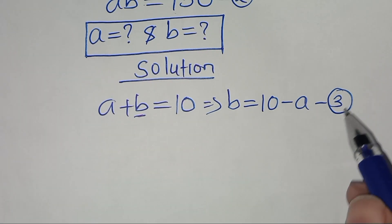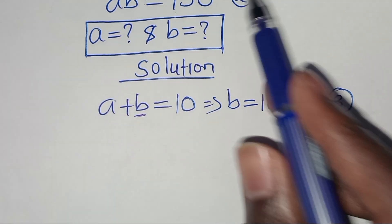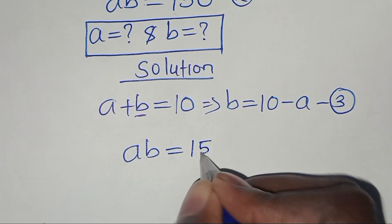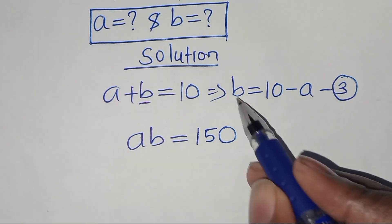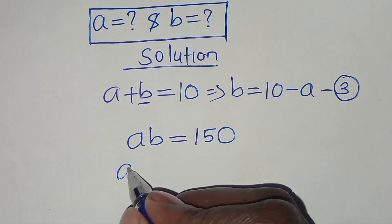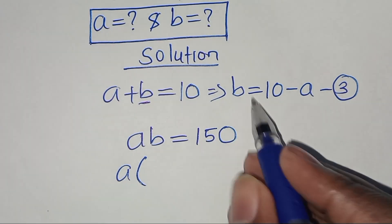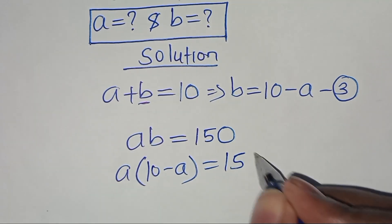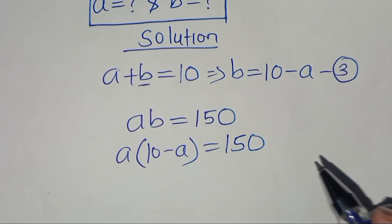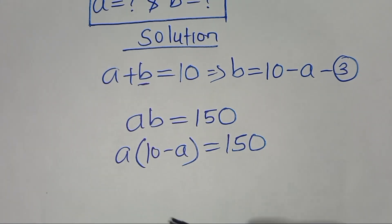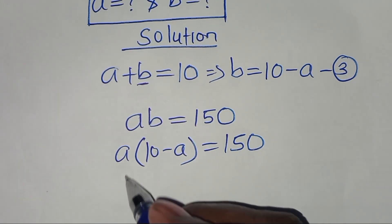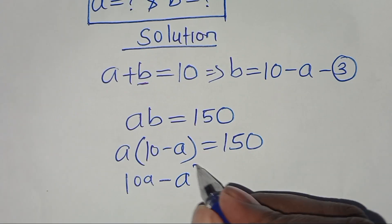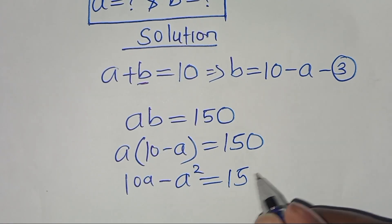Let's substitute equation 3 into equation 2. Remember equation 2 is a times b equals 150. Substituting b here, we have a times (10 minus a) equals 150. Therefore, here we have 10a minus a squared equals 150.